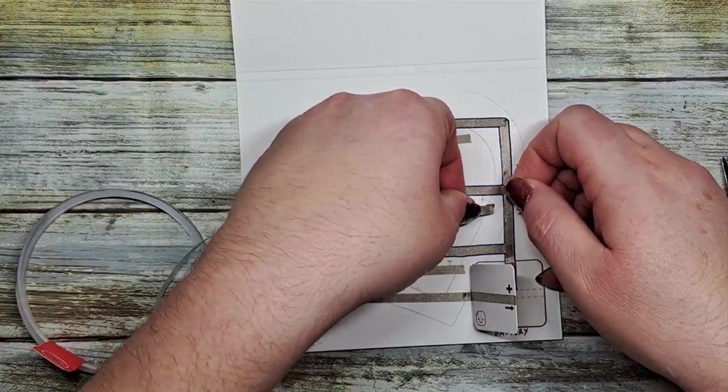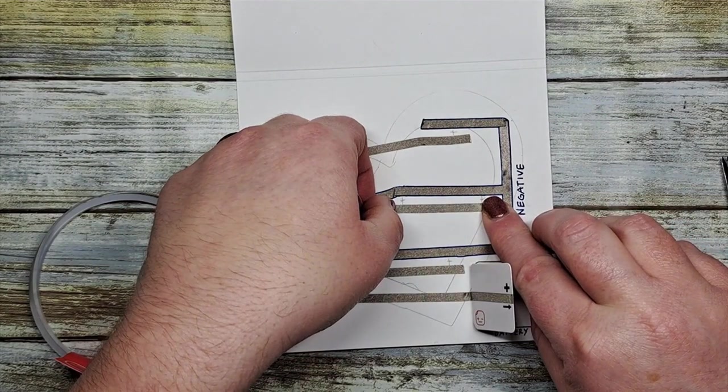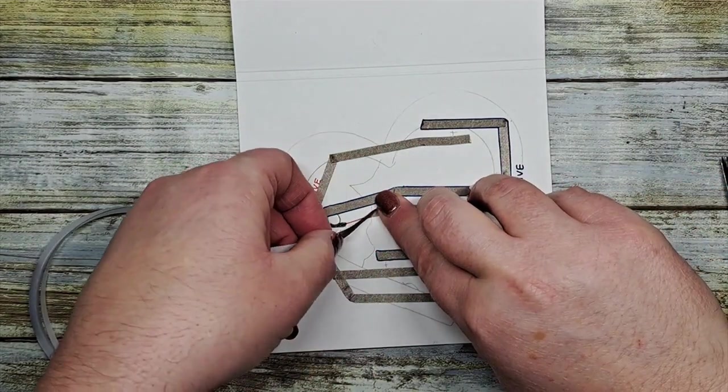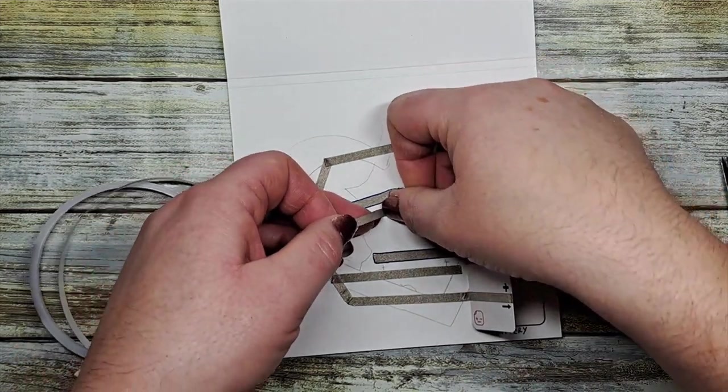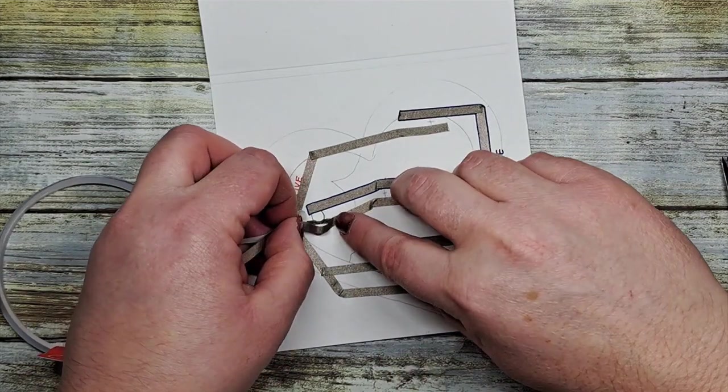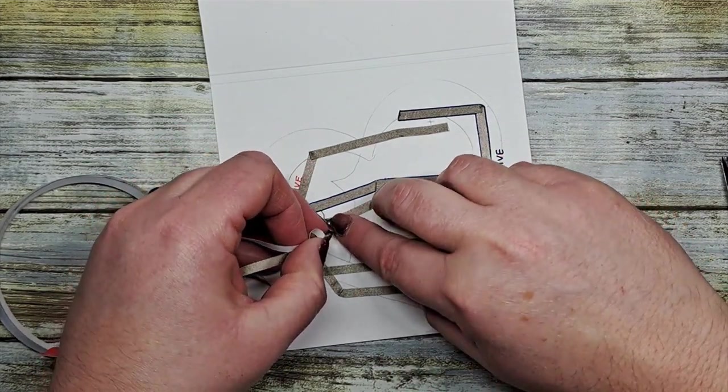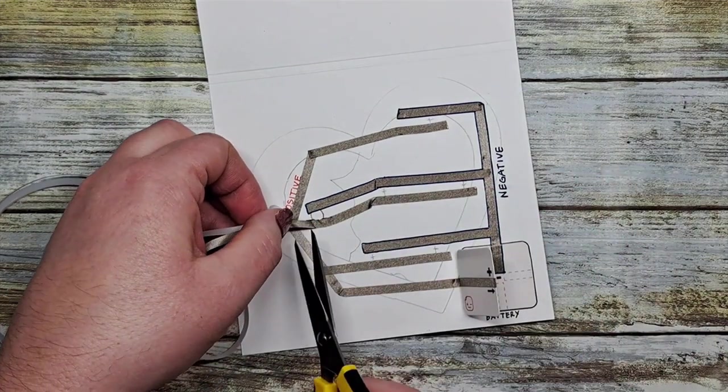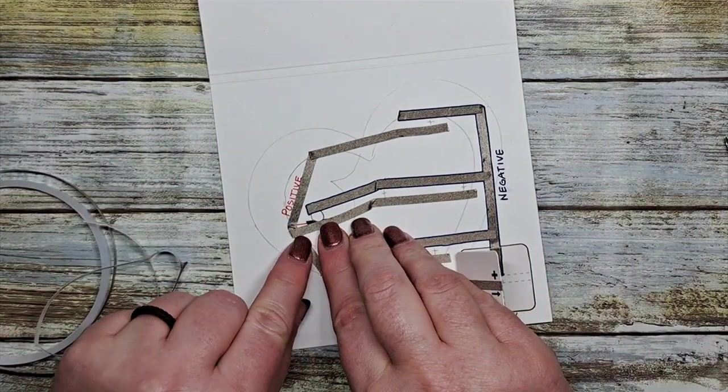And our final line is going to go in. I'm just using my nail just to kind of make those bends a lot easier. Sometimes it just doesn't want to stay. And that's okay. A little persuasion never hurt. We're going to do another little bend. And our final line of our positive side is down.